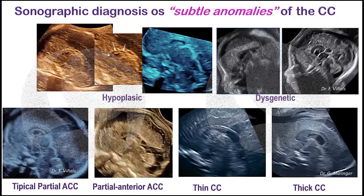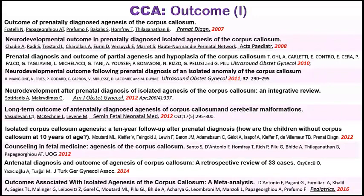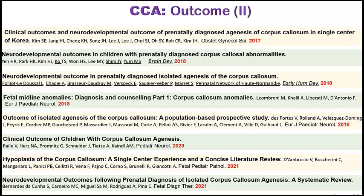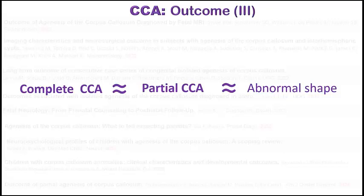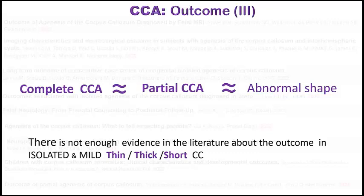This confidence in detecting the abnormal corpus callosum is really important, because after reading the literature published in the last 15 years about the outcome of corpus callosum anomalies, we can conclude that all corpus callosum anomalies — irrespective of extent, complete, partial, or dysplastic — have almost the same outcome. But we must remember that there is not enough evidence about the outcome in cases of isolated and subtle or mild thin, thick, or short corpus callosum, and because of this, the recommendation is not to measure it if everything else in the fetal CNS looks normal.